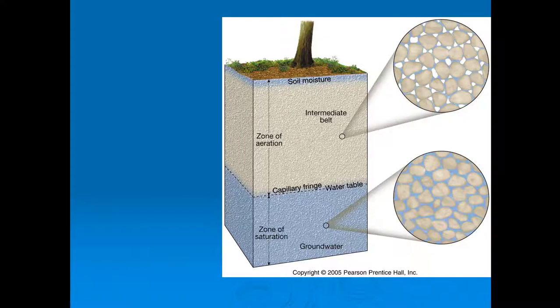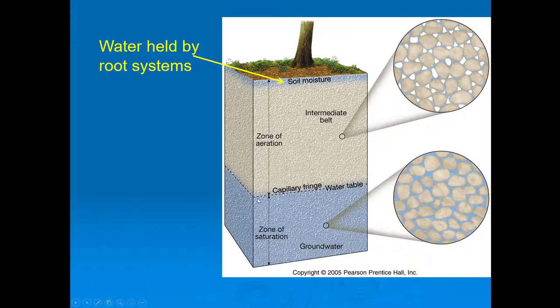Groundwater in general can be thought of as being found in different zones. This is a general groundwater layer diagram. The groundwater zones are broken into what's called the zone of aeration and the zone of saturation. The circle here is enlarged so you can see how the sediment is different in the zone of aeration compared to the zone of saturation, which is enlarged in the lower circle.